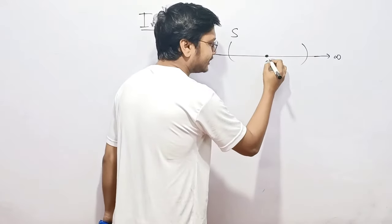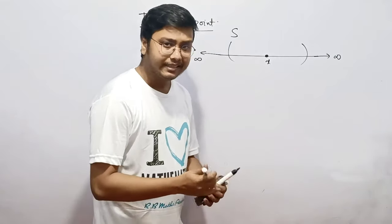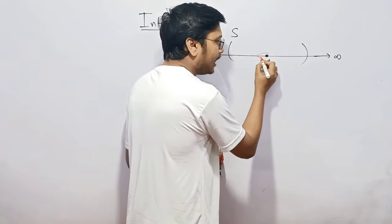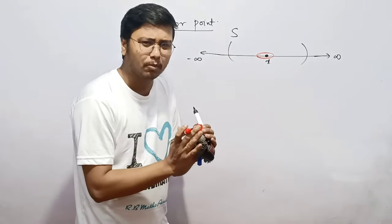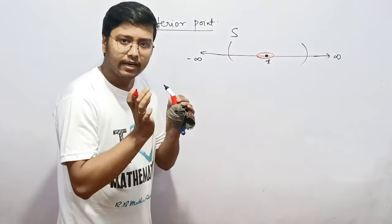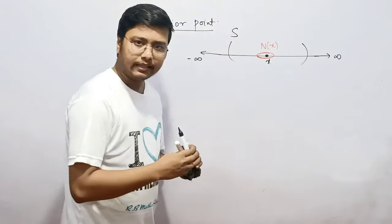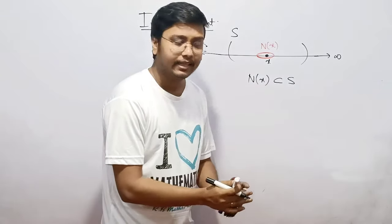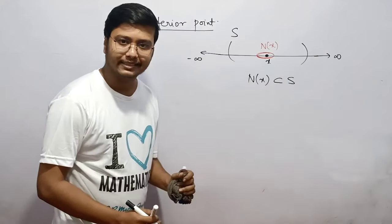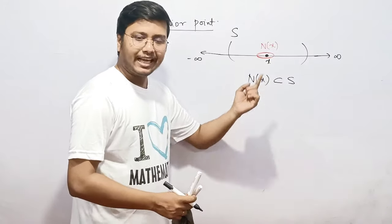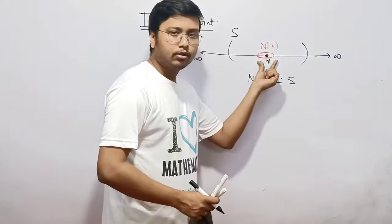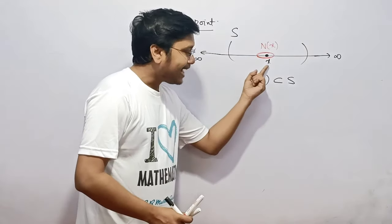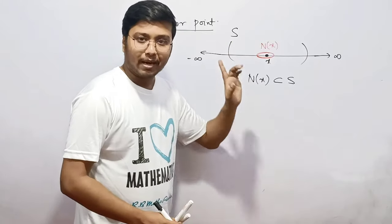Let's say X is an element of the set S. Then X is going to be an interior point of S if I can find a neighborhood of X — as small as possible — denoted by N(X), such that the neighborhood is completely contained inside S. That means the neighborhood is a subset of S. If that condition holds, X is said to be an interior point of S.